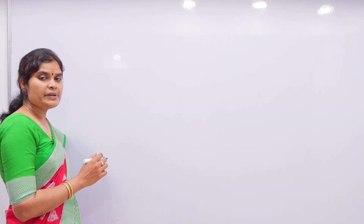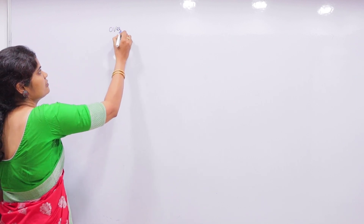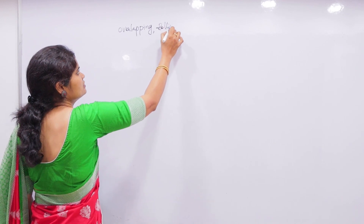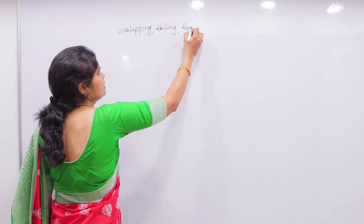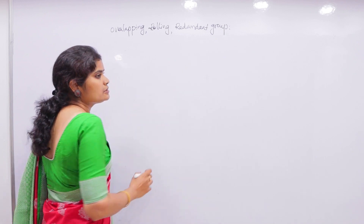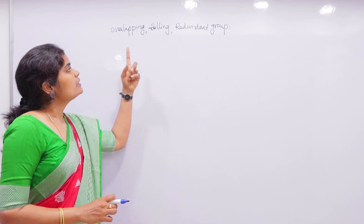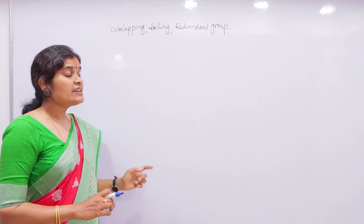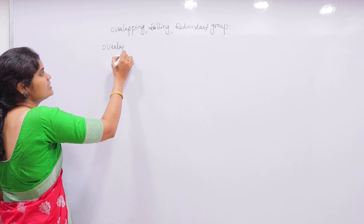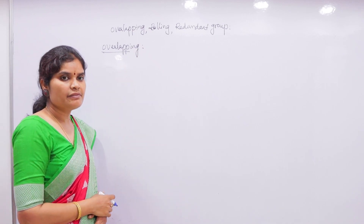Now let us go with the overlapping, redundant, and rolling techniques. So up to now we discussed about the pairs, quads, and octets. Now let us go with the overlapping, rolling, and redundant groups. First let us go with the overlapping group. The name says that overlapping means one number of a variable is overlapped with another number of 1.